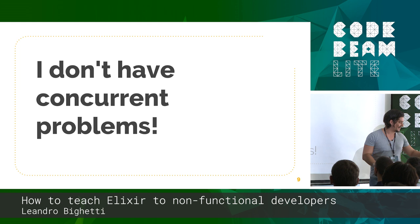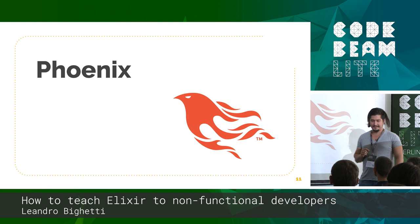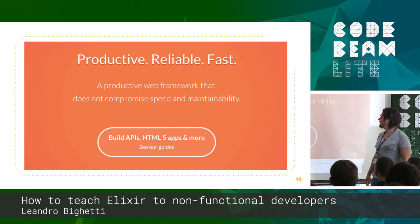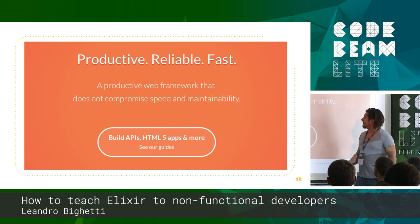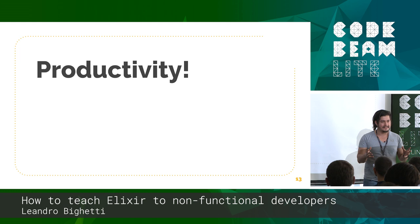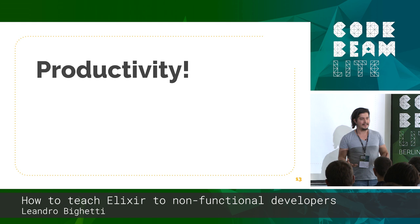This is what I usually try instead: Phoenix. You enter the Phoenix website and you see 'productive, reliable' — sounds good. And then you see APIs, HTML apps — this tells me everything I wanted to know as a web developer. It starts as 'a productive web framework.' Productivity is basically a problem everyone has. Everyone wants to be productive — that's a good selling point.